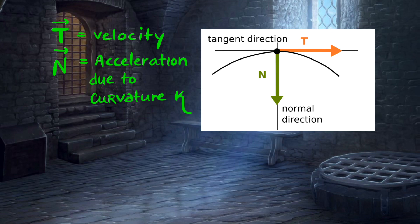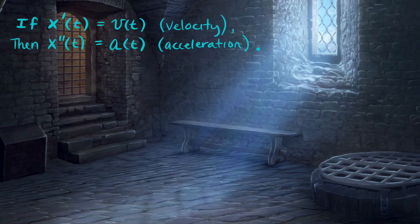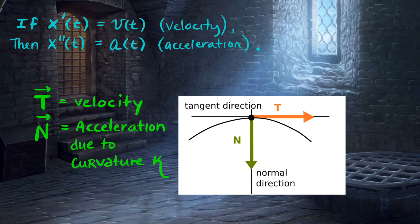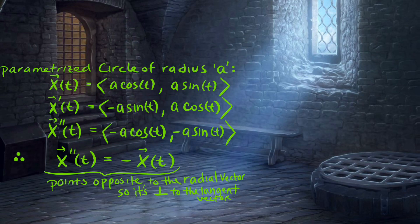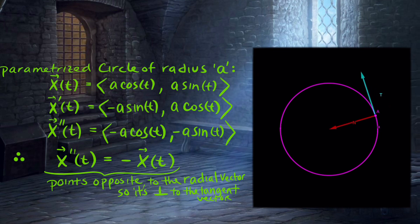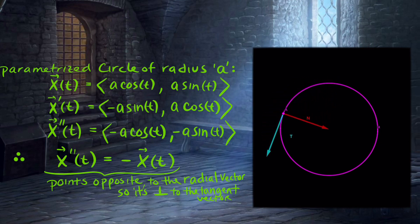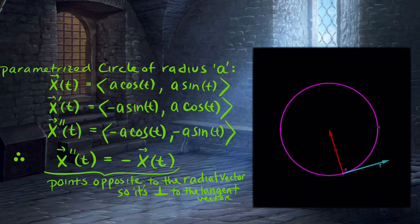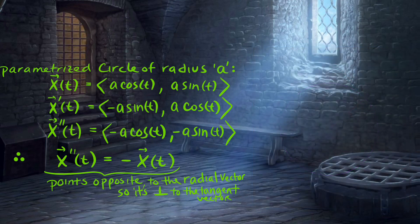Consider someone standing on the surface of the earth: traveling in a straight line means moving along the direction of the tangent line, yet they are fixed to the earth's surface by gravity, so they deviate from their straight-line path downwards, experiencing a force due to curvature given by the second derivative — acceleration. For a circle of radius a parametrized by its coordinates, the tangent vector x′ and acceleration vector x″ show that the acceleration is the negative of the position vector, pointing inward toward the center. These two vectors remain constant and perpendicular around the curve.